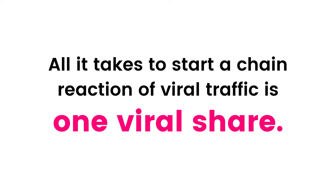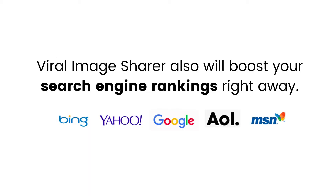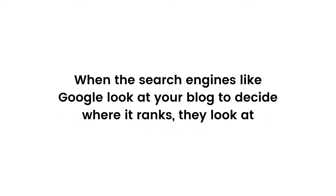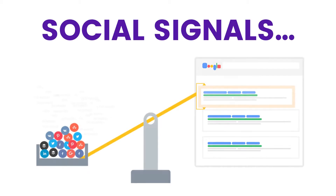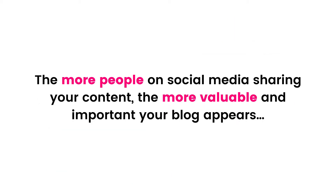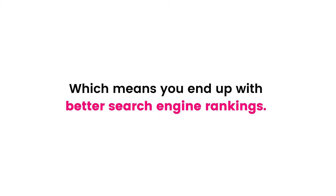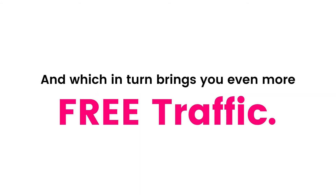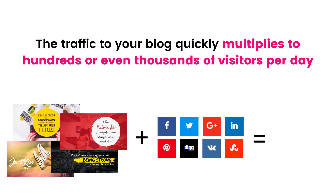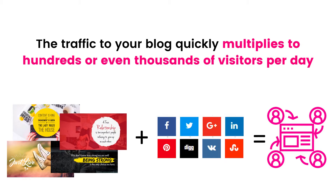In addition to changing the way content is shared and giving you total control, Viral Image Sharer will also boost your search engine rankings right away. When search engines like Google look at your blog to decide where it ranks, they look at something called social signals. The more people on social media sharing your content, the more valuable and important your blog appears, which means better search engine rankings and even more free traffic. With more shares on social media, the traffic to your blog quickly multiplies to hundreds or even thousands of visitors per day.